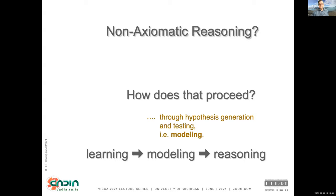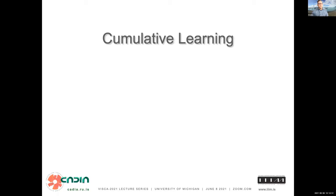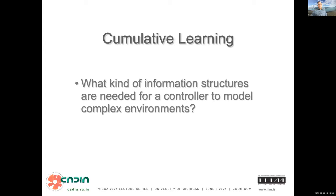Now we can talk about cumulative learning. What is it? It's learning that happens over time, cumulatively, where new information is unified with old prior knowledge in a consistent way. That's another reason you need reasoning — sometimes you get incorrect information, sometimes new information overturns what you thought was true, and you need to reconcile these conflicts. When you learn something completely new, you need to connect it to whatever you already know — otherwise it's meaningless.